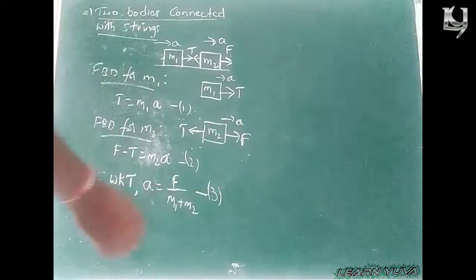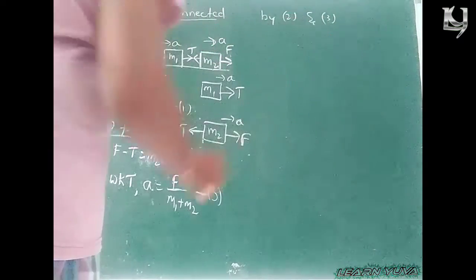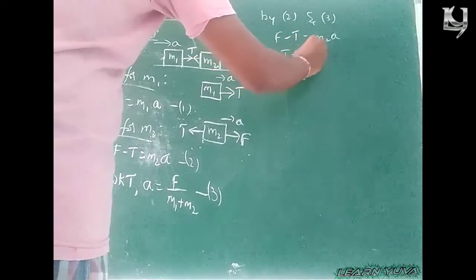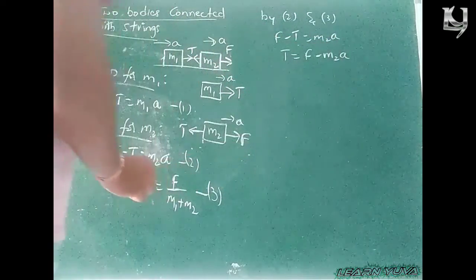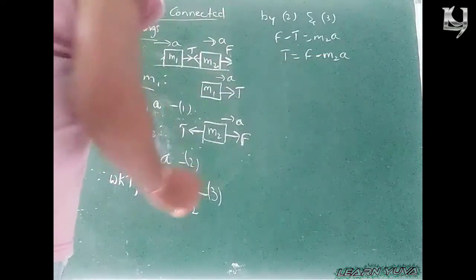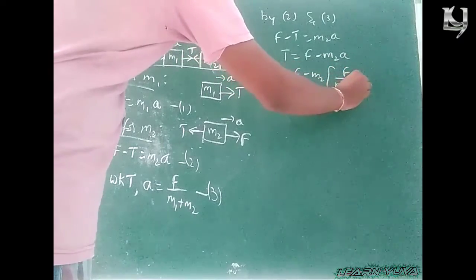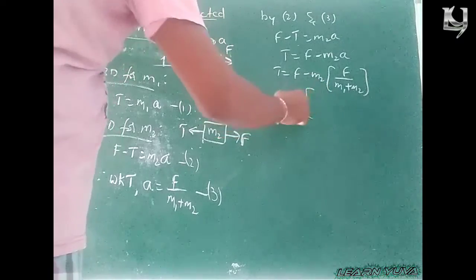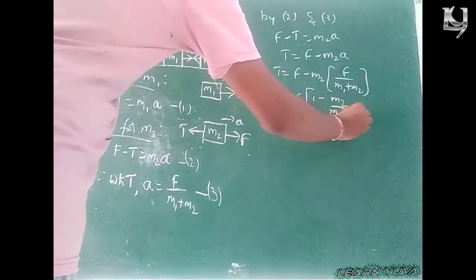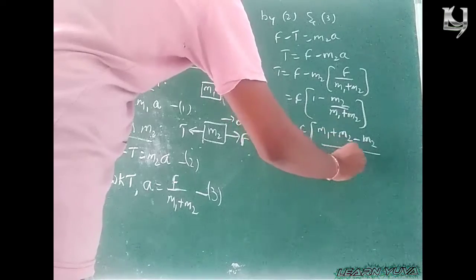Now, find the tension force from equations 2 and 3. F minus T equals M2·A, so T equals F minus M2·A. Substituting A equals F over M1 plus M2: T equals F minus M2 times F over M1 plus M2. Taking F as common: T equals F times (1 minus M2 over M1 plus M2), which gives F times (M1 plus M2 minus M2) over M1 plus M2.